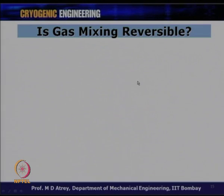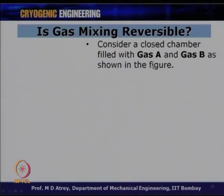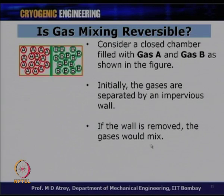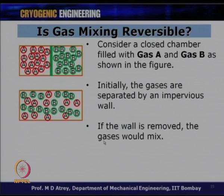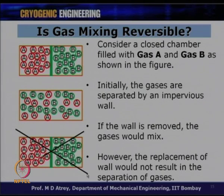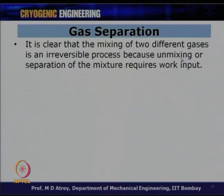Is gas mixing a reversible process? Consider a closed chamber with gas A and gas B separated by an impervious wall. If the wall is removed, the gases mix. Replacing the wall does not result in separation, so this process is not reversible. The mixing of two different gases is an irreversible process because unmixing or separation of the mixture requires work input.